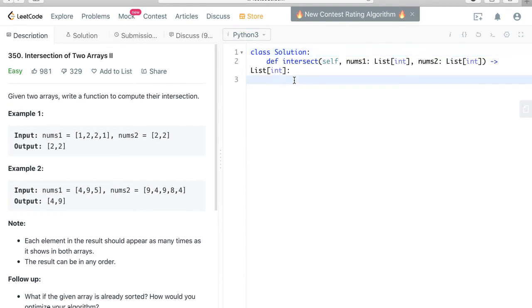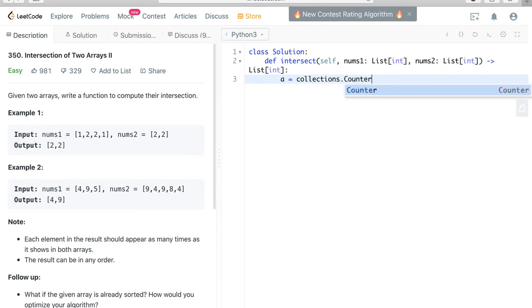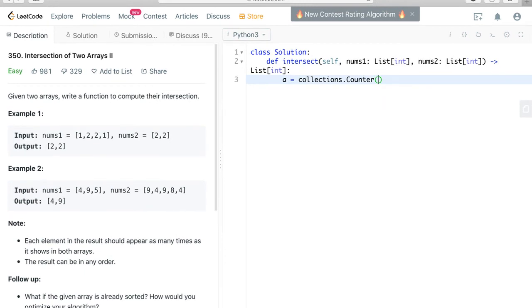So let's say a equals collections.counter and we'll put in nums1 and we do the same for nums2 so we call it b, b equals collections.counter and nums2. So right now if we have